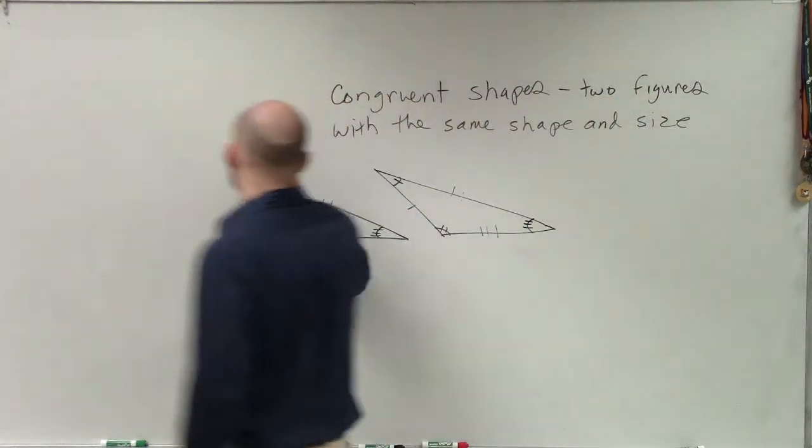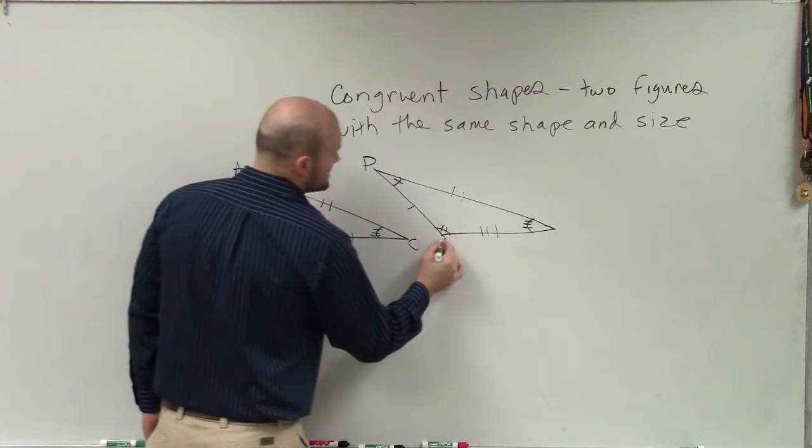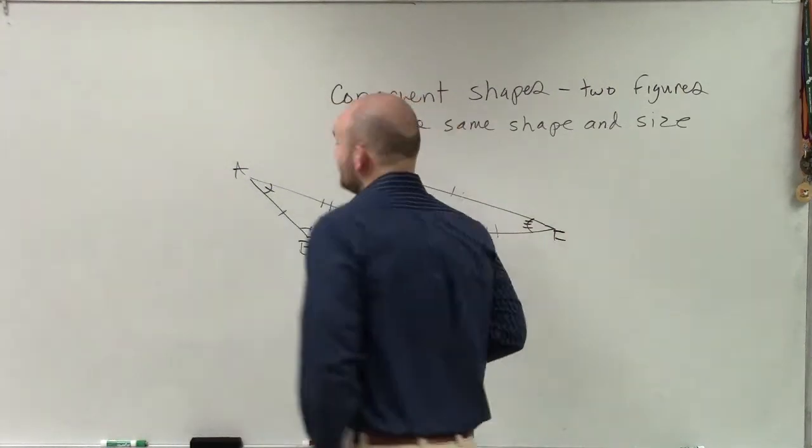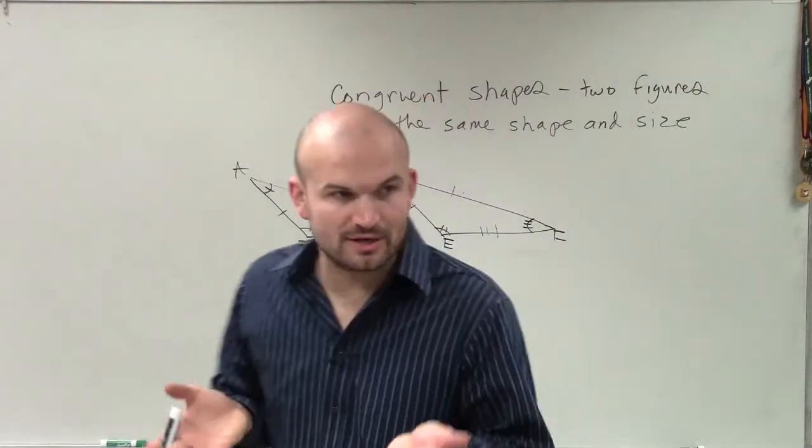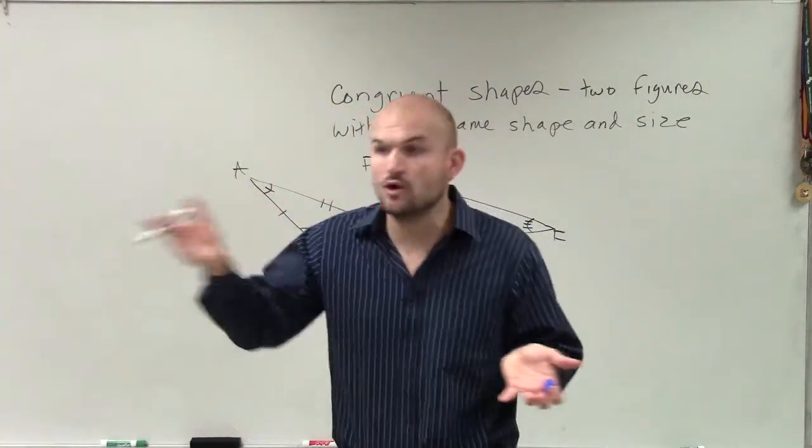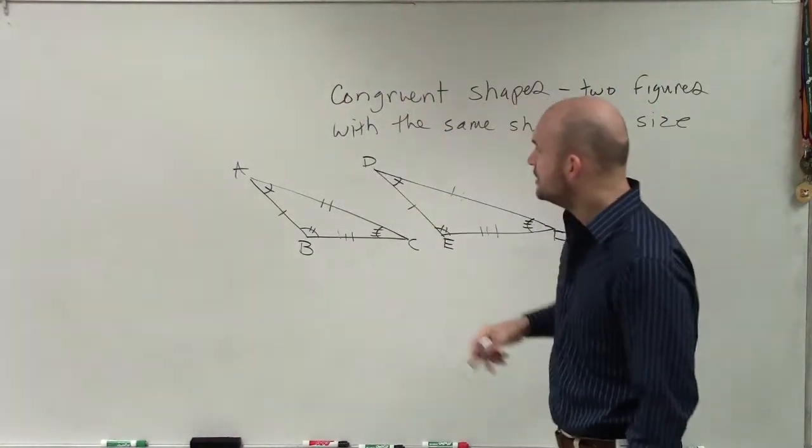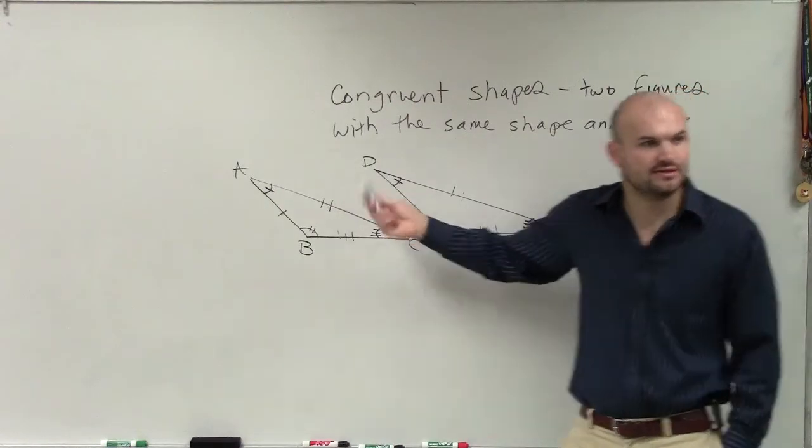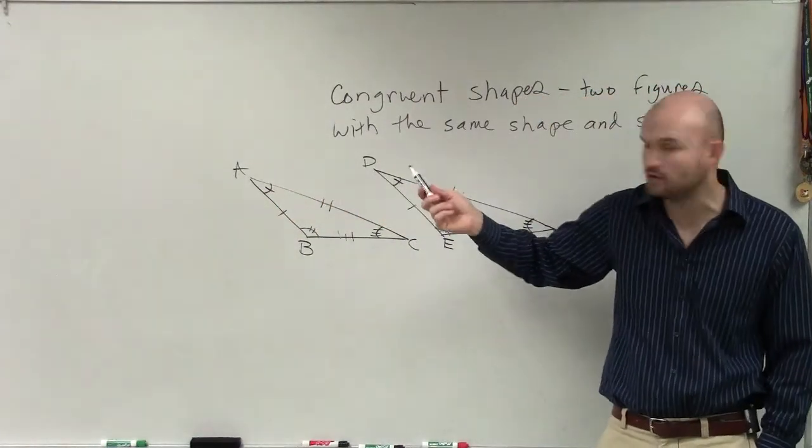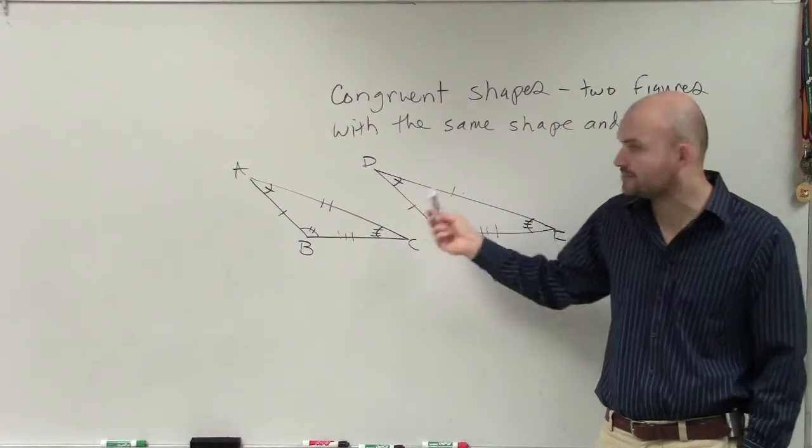So the next thing we talked about: if we have congruent shapes, let's call this ABC and this one DEF. If you guys remember, when we were labeling angles and talking about angles that were exactly the same, we wrote them in the exact same order. So in this case, you can see that A is congruent to D. These are what we call corresponding parts, and we'll talk more about this in a second. But A is the same angle as D—they're both equal in measure.